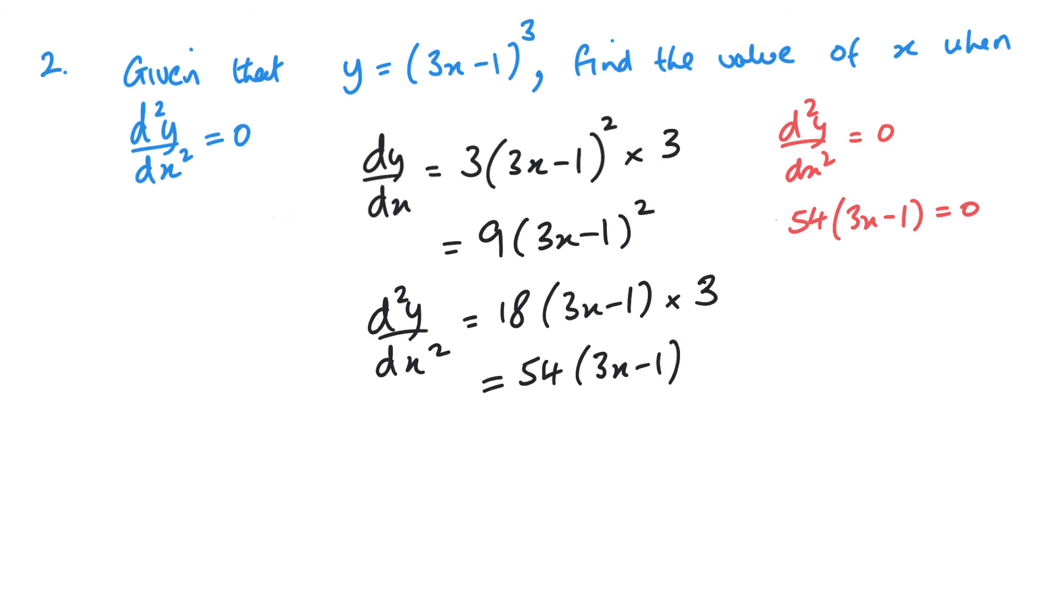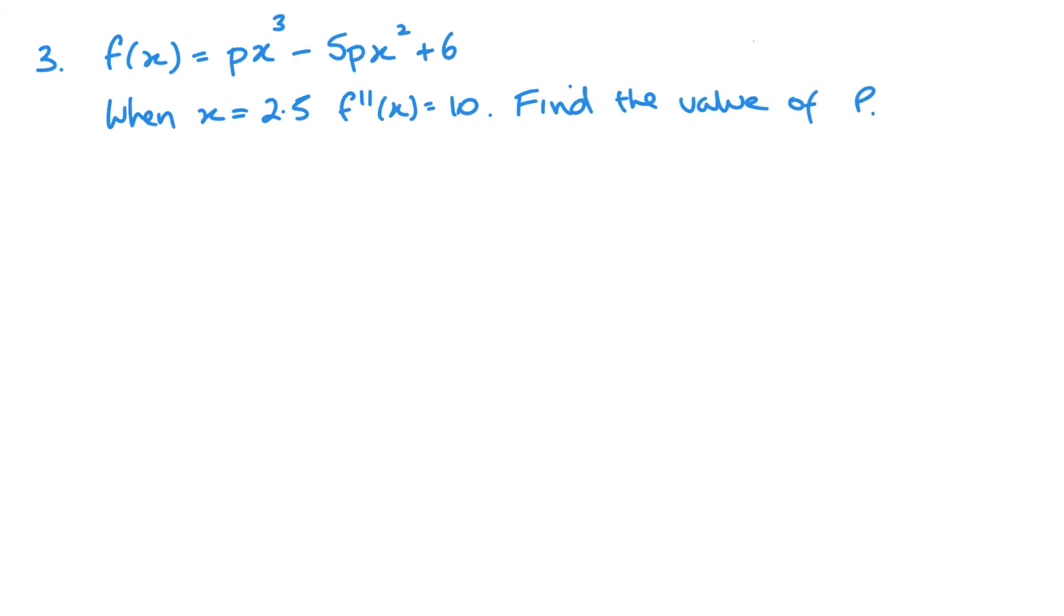That's obviously a longer way of doing it, but why would you do that? So, the easier way would be just to divide straight away by this 54, wouldn't it? And that gives me 3x minus 1 equals 0, 3x equals 1, x equals a third. So, just think about things before you do it and rush in.